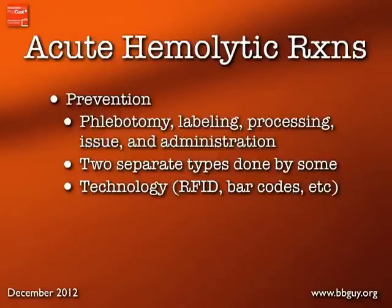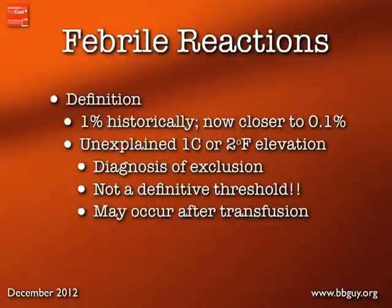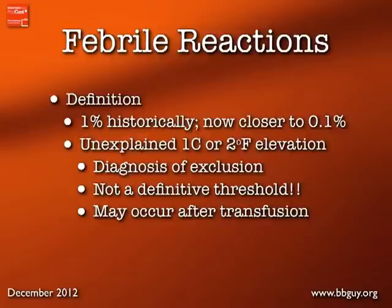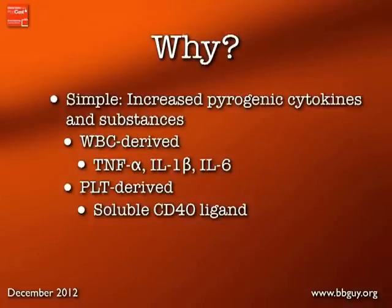Let's move on to febrile non-hemolytic transfusion reactions (FNHTRs). We're seeing considerably less of these now — historically about 1% of transfusions, higher in platelet transfusions, but now closer to 0.1% or a little higher for platelets. It's a diagnosis of exclusion: a patient with an unexplained 1°C (2°F) elevation in temperature. The pathophysiology is simple: pyrogenic cytokines and substances — either TNF-alpha, IL-1-beta, IL-6 from white cells, or soluble CD40 ligand from platelets — cause fever.